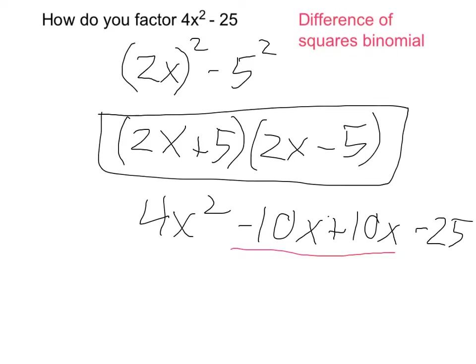And because those middle terms cancel each other out, I get what I started with, a 4x squared minus 25. Again, what I have up here is the original written in factored form, and it's a difference of squares binomial. Thank you.